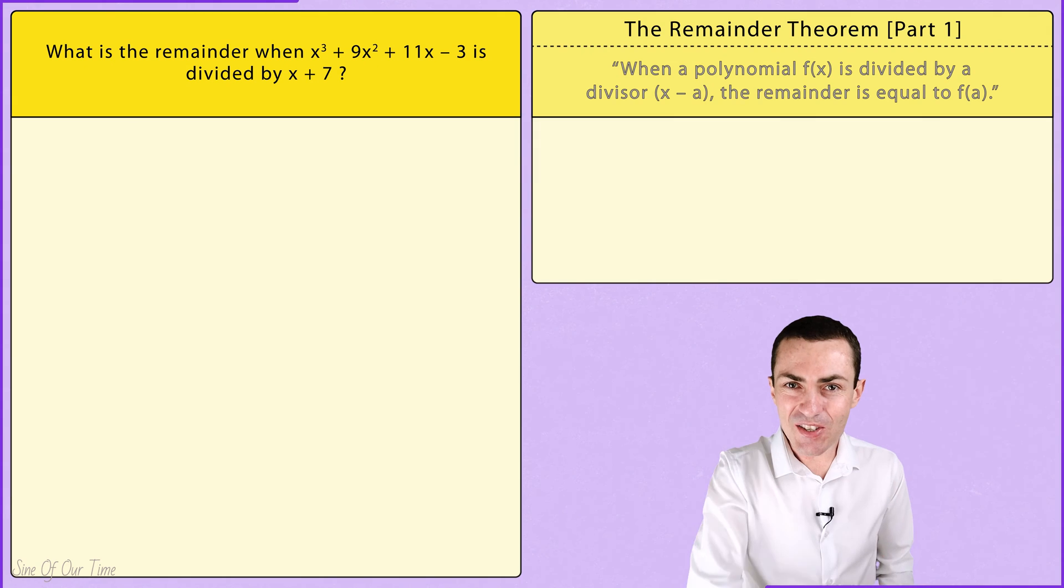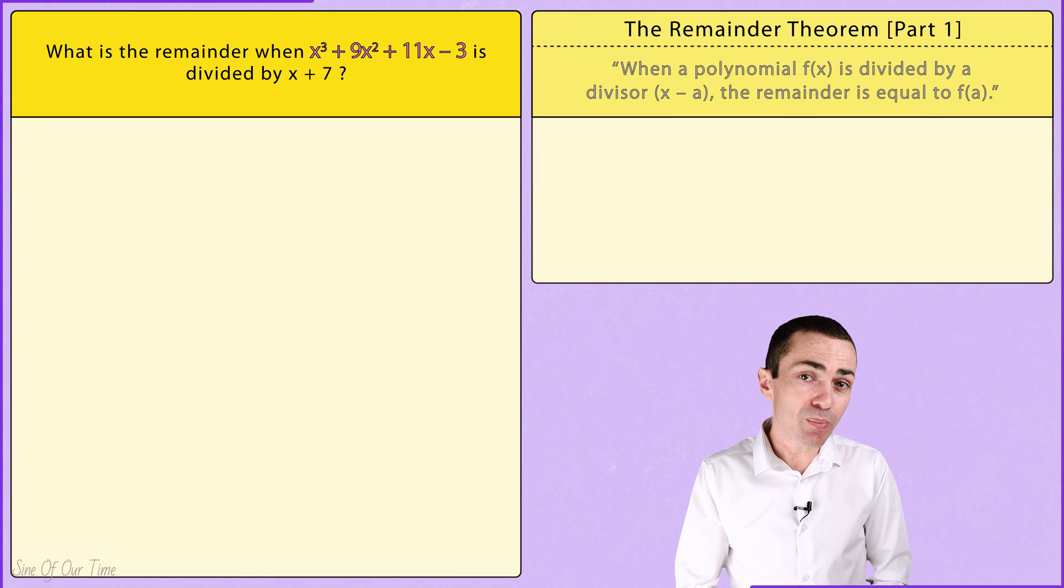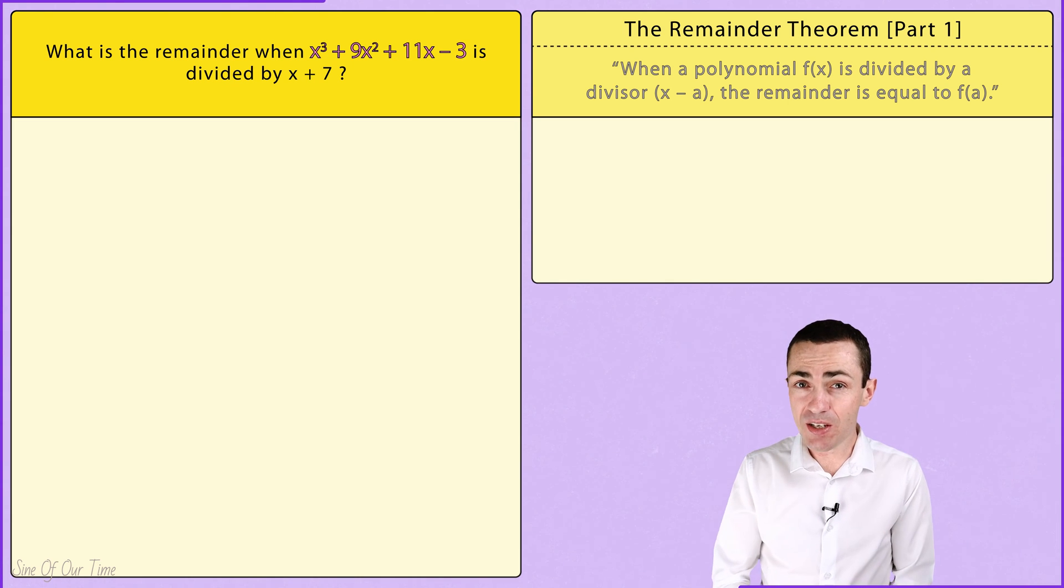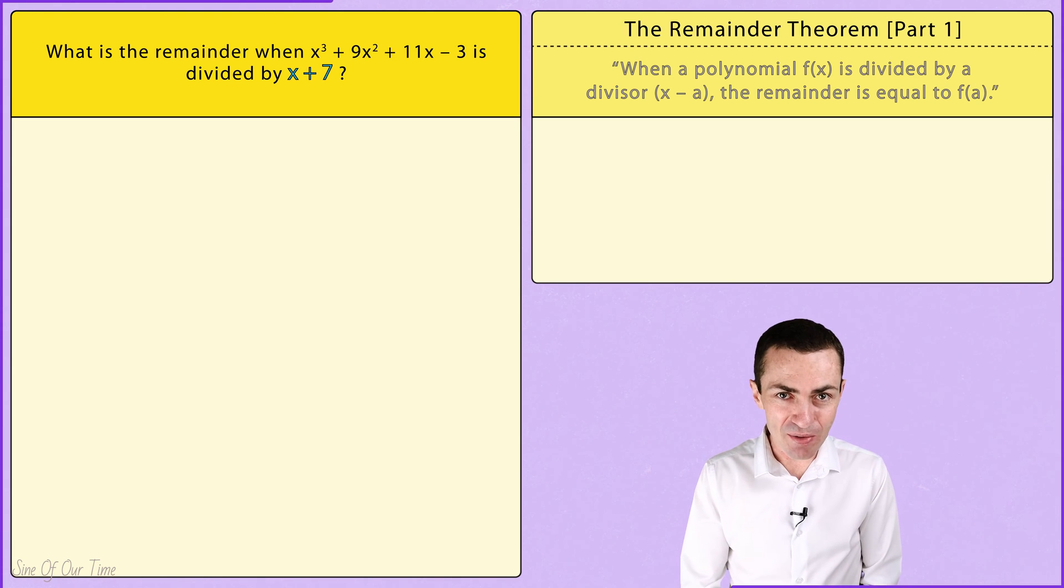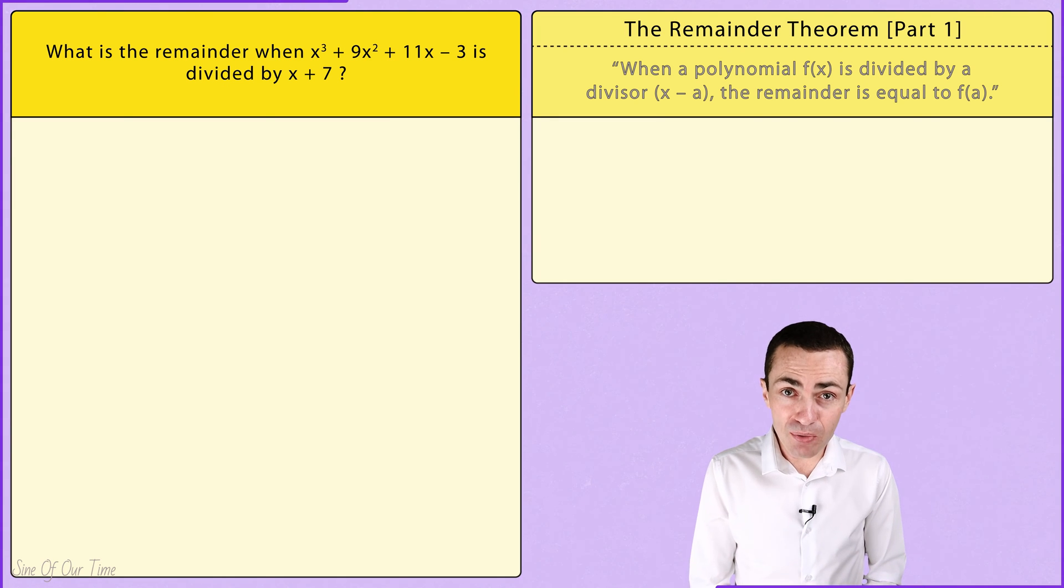Let's consider this example, in which we are asked to determine the remainder when x³ + 9x² + 11x - 3 is divided by x + 7. We could start by creating a polynomial function from this expression by letting f(x) equal to that x³ + 9x² + 11x - 3.